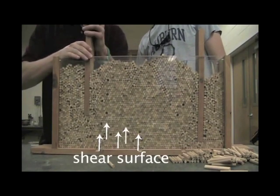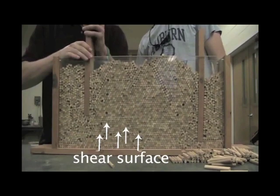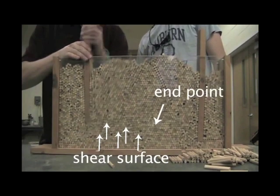You can see the shear surface being formed, but notice it does have an end point in the soil mass and does not make it to the surface.